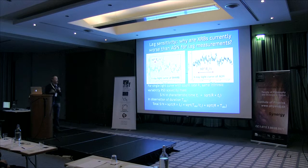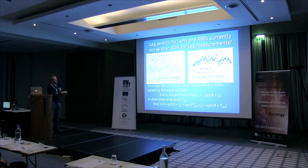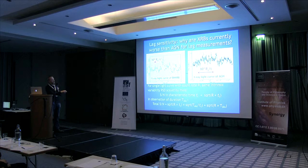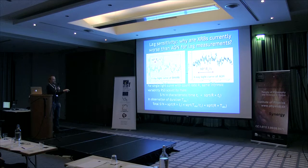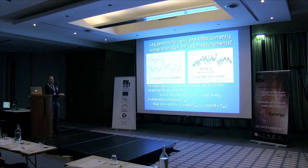Why are X-ray binaries currently a lot worse than AGN for lag measurements? If you look at the light curves - this is NGC 5506 with EXOSAT, still a great light curve - you can see the nice continuous variability. But if you look at the same timescale for an X-ray binary, you can hardly see anything. It's photons per timescale - you have many more photons per characteristic timescale in an AGN than in an X-ray binary. That means you have much better signal to noise per characteristic time. Essentially you take the count rate multiplied by the characteristic time and take the square root - that's your signal to noise, just how many photons you've got in that characteristic time.